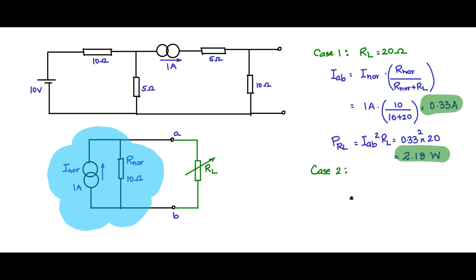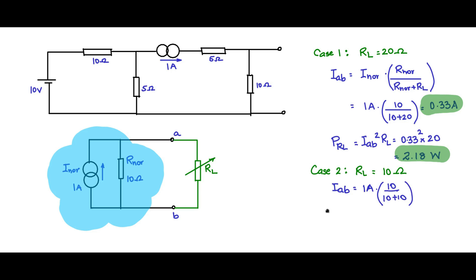Now take the case when RL = 10 ohms, which equals the internal impedance of the Norton equivalent, so maximum power transfer must occur. IAB = 1 amp × 10 / (10 + 10) = 0.5 amps. Therefore, P_RL = 0.5² × 10 = 2.5 watts, which is indeed greater than the previous case.